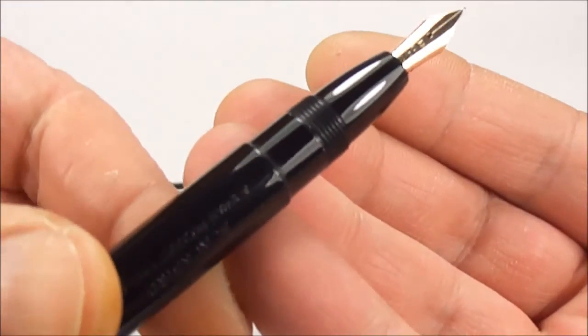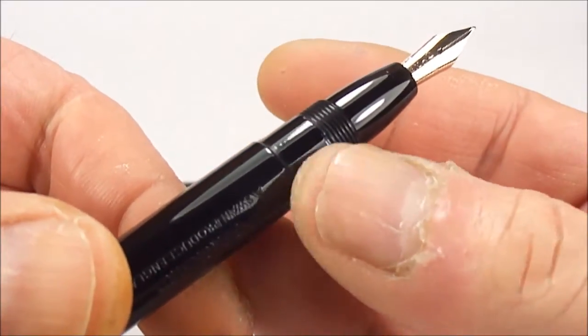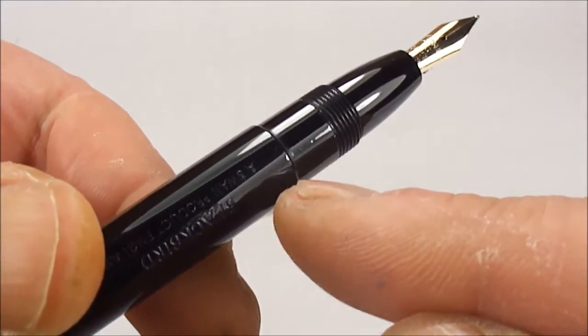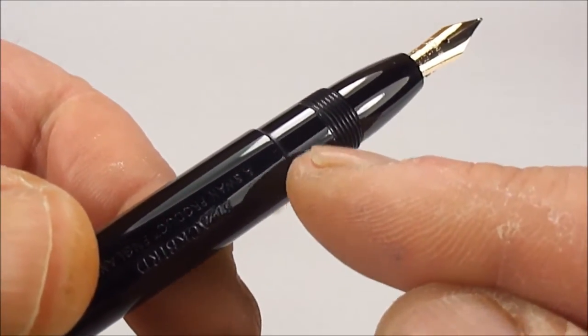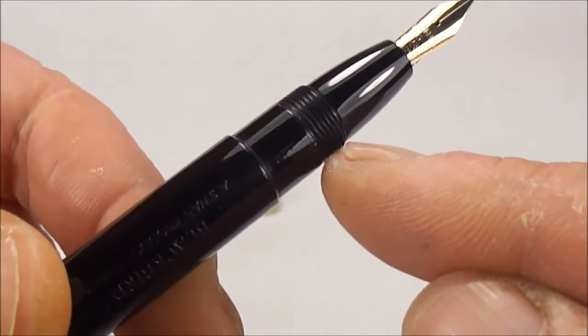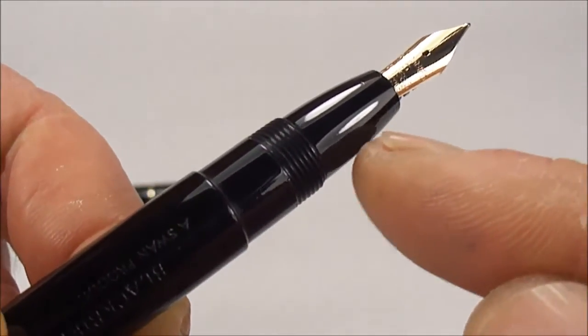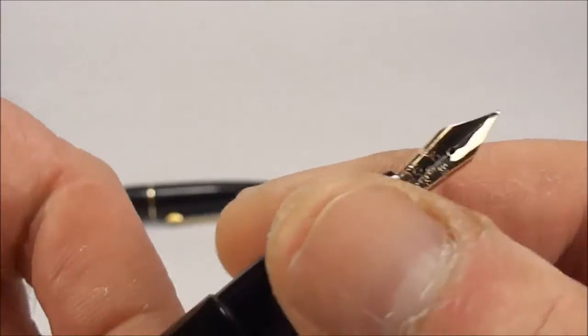Let's show you the section to the top there. You can see it's got this little step down section where the cap sits onto the barrel there. We've got the threaded section and you can see the feed tapers down towards the nib.